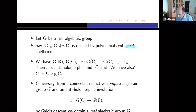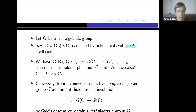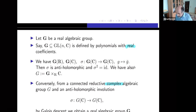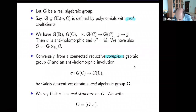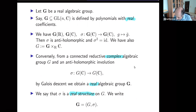We also have the corresponding complex algebraic group G (non-bold). Conversely, from a connected reductive complex algebraic group G and an antiholomorphic involution, we obtain a real algebraic group G. We call this antiholomorphic involution the real structure on G. So instead of working with a real algebraic group given by polynomials with real coefficients, we can work with the complex algebraic group and an antiholomorphic involution. We write G_bold = G^sigma.